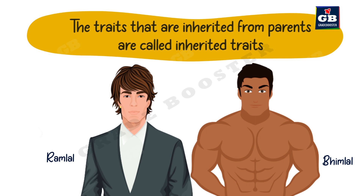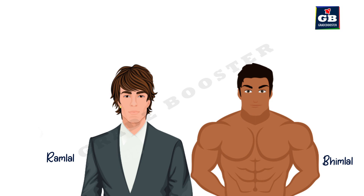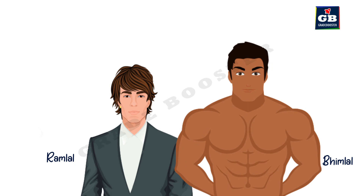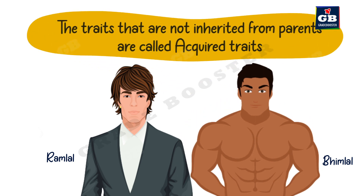The traits inherited from parents are called inherited traits. There is another type called acquired traits. Ramlal has a hole in his earlobe from ear piercing — a characteristic not inherited from his parents. Similarly, Bhimlal developed muscles by doing exercise, which he did not inherit from his parents. These kinds of traits, developed during one's lifetime, are called acquired traits.